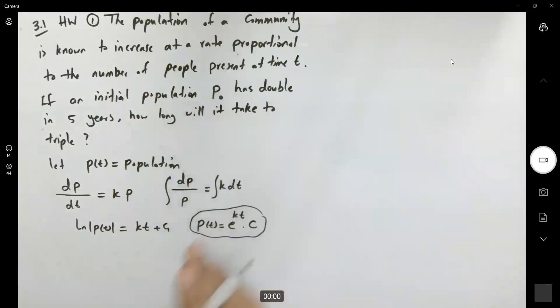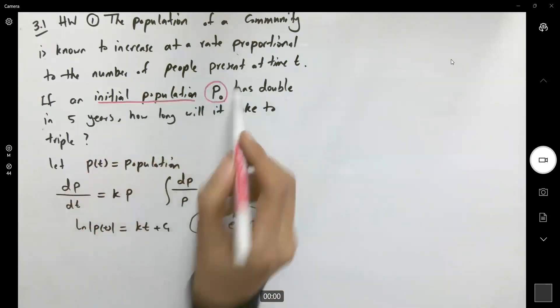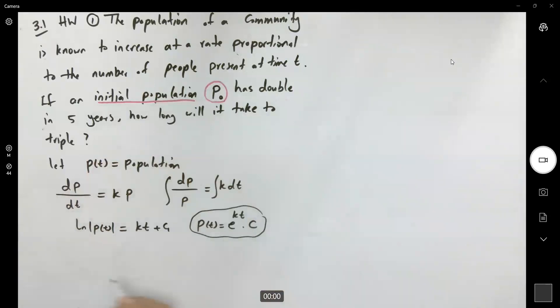What information is given? The initial population is denoted by p₀. For the initial population, time is 0. At t = 0, p(0) = e⁰ × C = C, which equals p₀. Therefore, the initial value C = p₀.